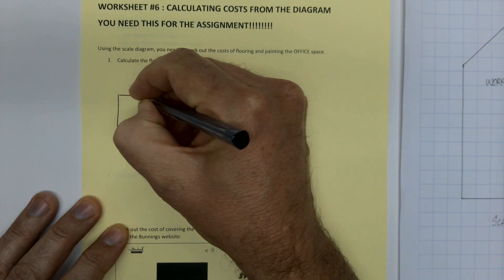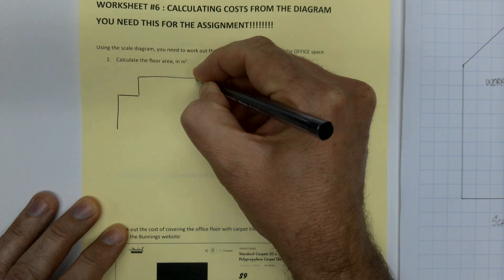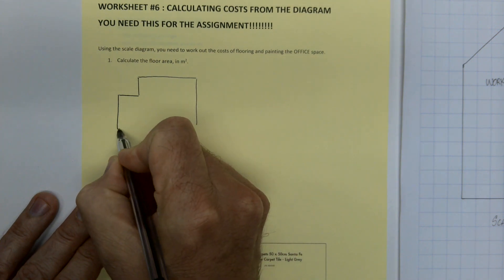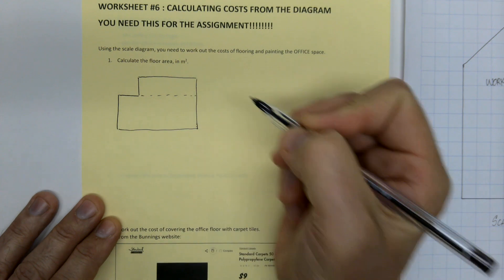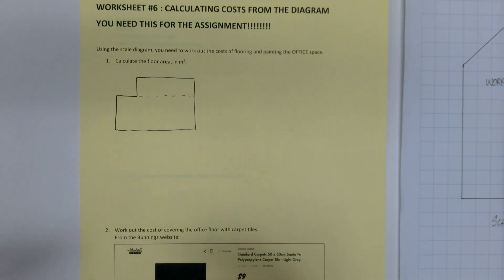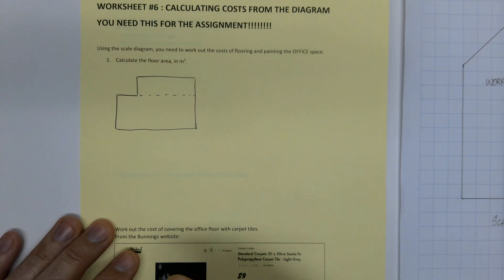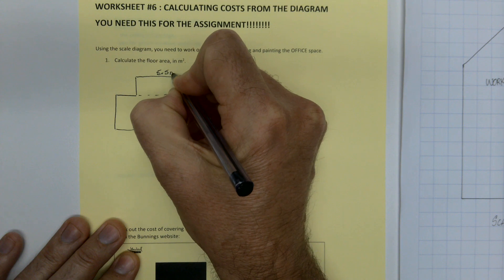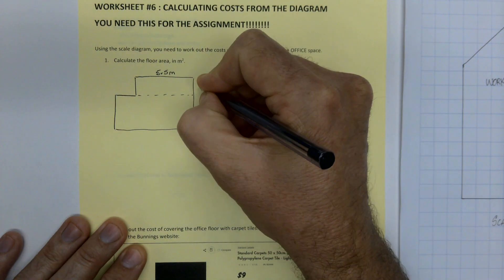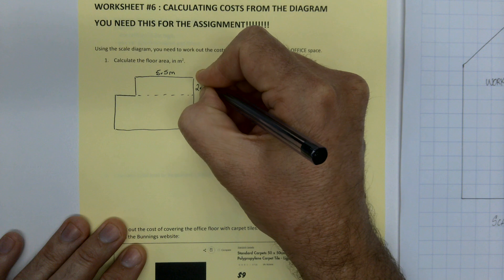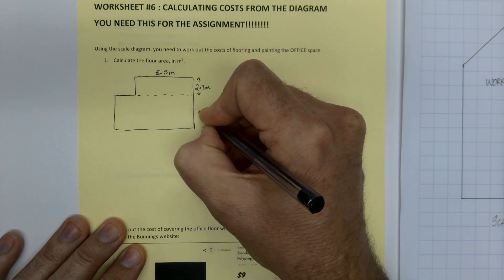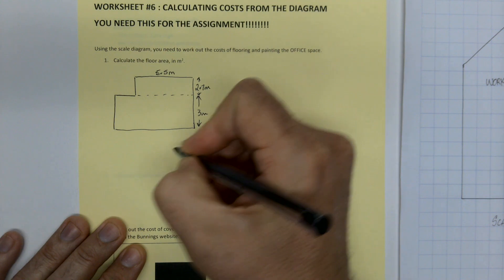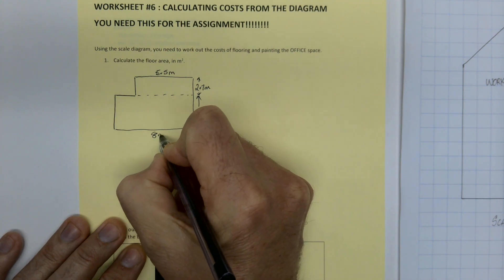You need a nice neat diagram of the office or the space that you're actually going to be looking at. It doesn't have to be to scale, it's just got to not look like a dog's breakfast. And then you put in the dimensions. So you've gotten this off your original diagram. That one's three meters there and eight meters across the bottom.